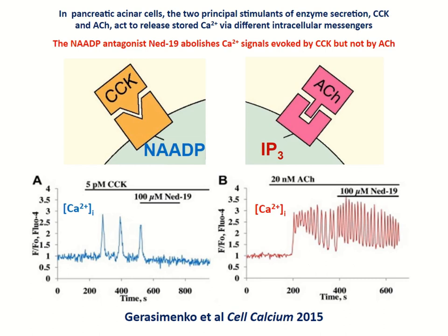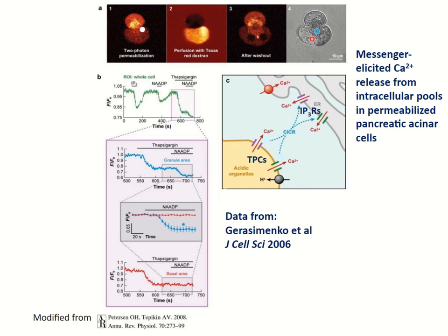Acetylcholine interacts with muscarinic receptors of type 3, where the primary intracellular calcium-releasing messenger is IP3, inositol trisphosphate. These two systems create calcium signals with somewhat different spatiotemporal characteristics. What is important in the context of this talk is that the NAADP antagonist NET19 blocks the calcium signals induced by CCK, but has no effect on the calcium signals induced by acetylcholine. So we have a nice control in this system.